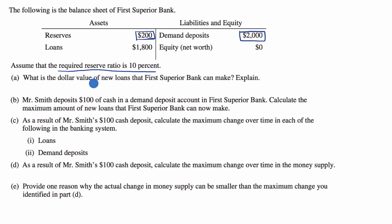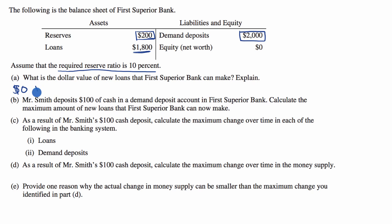Part A says: what is the dollar value of new loans that First Superior Bank can make? Well, as I just mentioned, this bank is already at its minimum reserves. It's already loaned out as much as it could. If you get $2,000 in deposits and you have a 10% reserve ratio, you can loan out 90% of that $2,000, and it has already loaned out 90% of the $2,000. So the dollar value of new loans that First Superior Bank can make is $0, because it's already at minimum reserves.